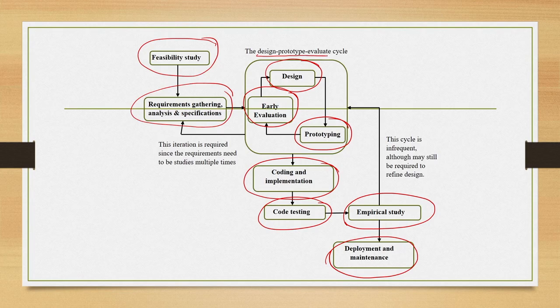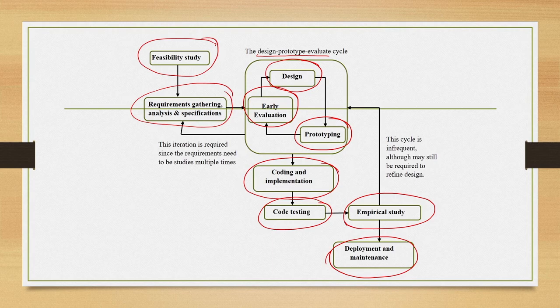This cycle is called the design-prototype-evaluate cycle. The cycle stops when the design stabilizes — that means no further problems are found in the design after evaluation of the prototypes. This cycle primarily refers to the design of user interfaces, but the design stage also refers to the design of the code or program which implements the design. In code testing we test the code for proper execution, whereas in empirical study we test usability of the end product by involving end users.